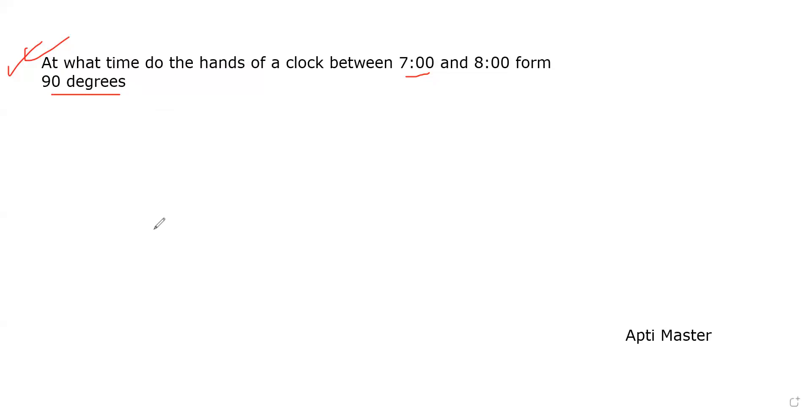Basically at seven o'clock, the hour hand is 210 degrees from the vertical. So after t minutes...